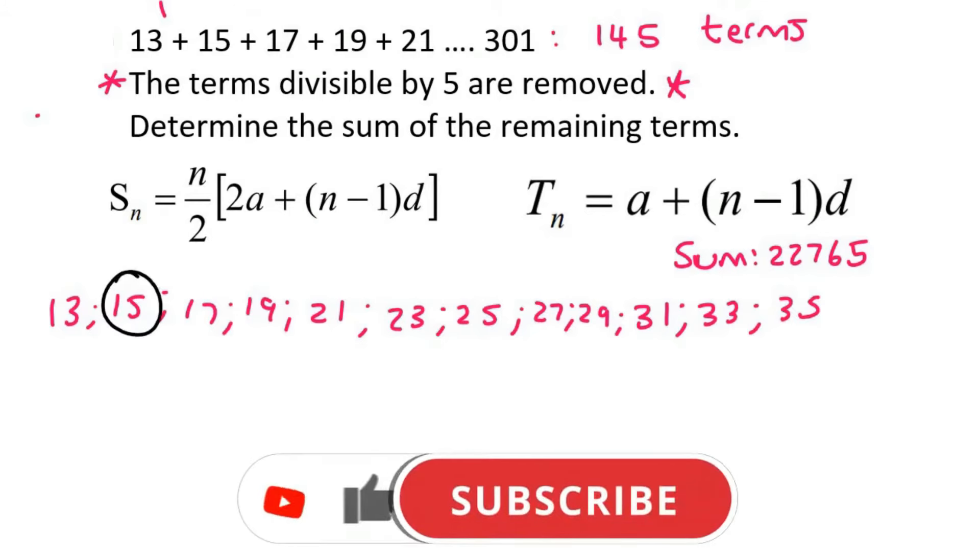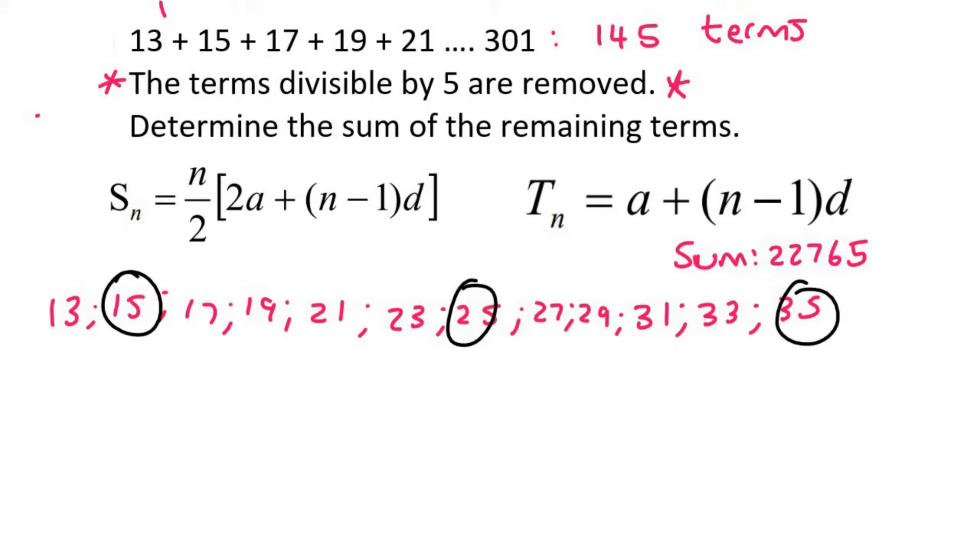The number 15 is divisible by 5. The number 25 and the number 35. Guess what? Those numbers form their own pattern. And it always will work out like this. 15, 25, 35. Look at that. It's its own little pattern.